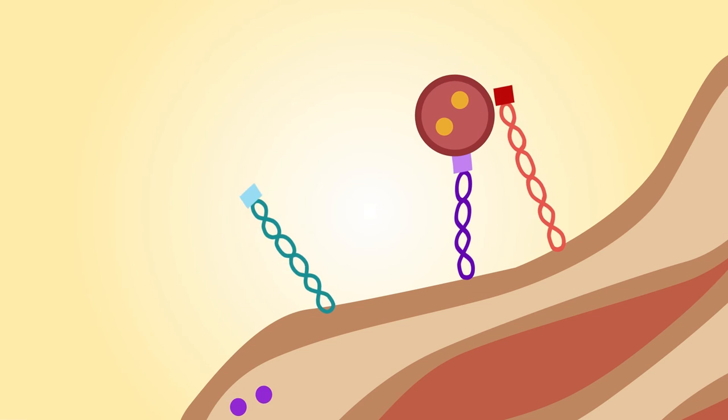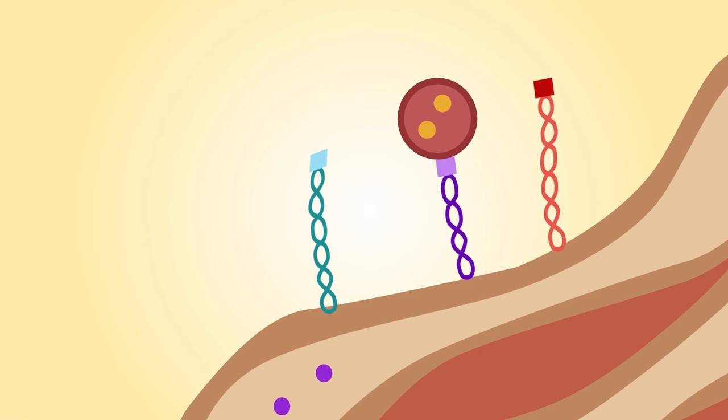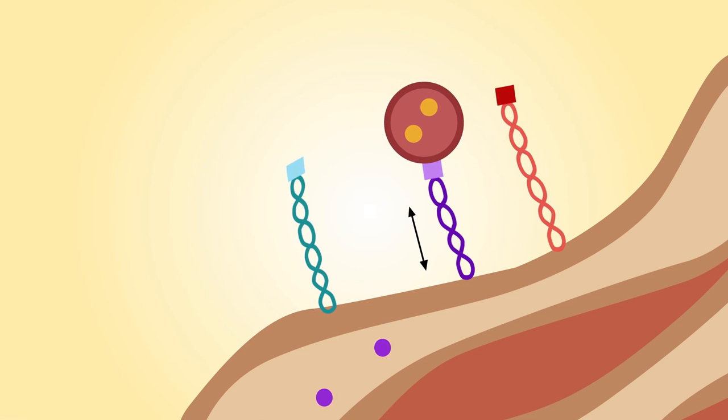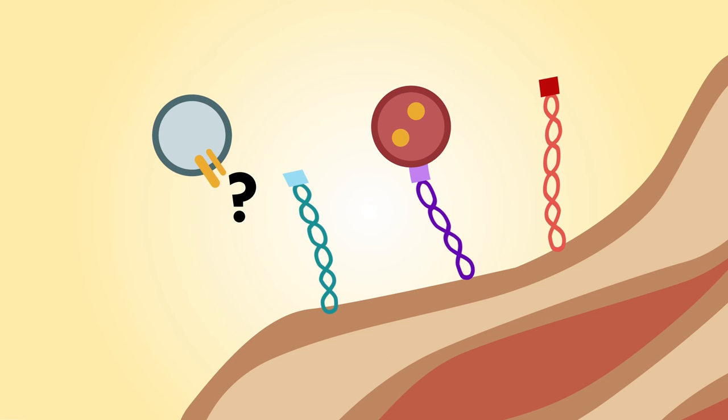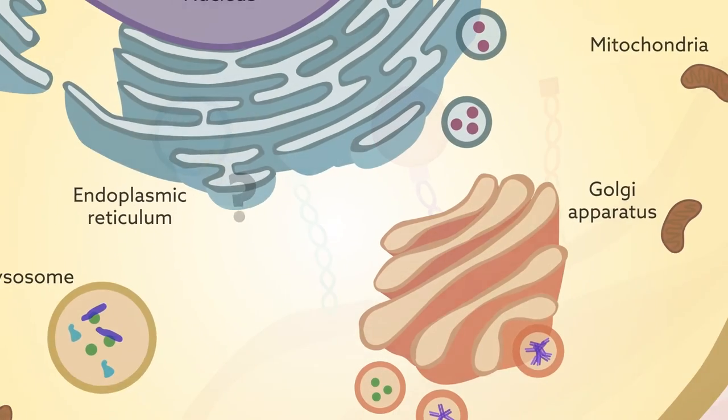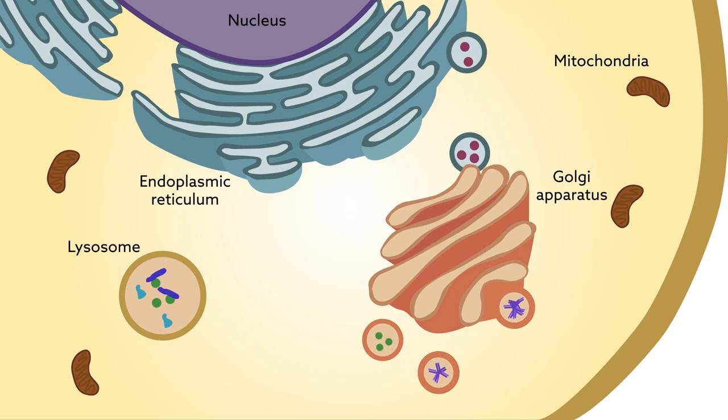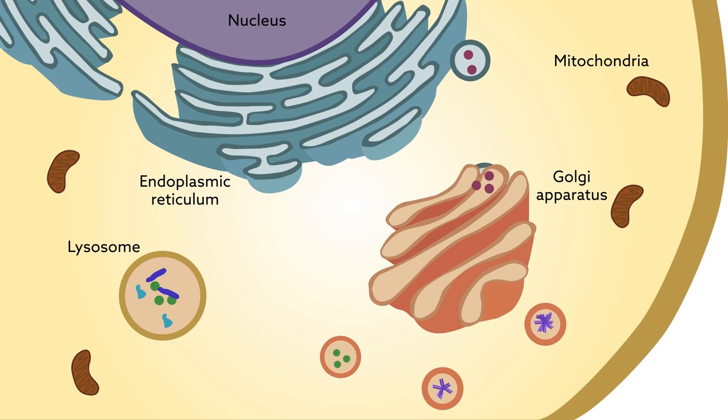It's still unclear why the Golgins seem to bind only at the very end, placing vesicles the furthest from their fusion target, or what vesicular molecules the Golgins bind to. Future work may answer these questions and reveal how eukaryotes evolved such a diverse postal code system for membrane trafficking.